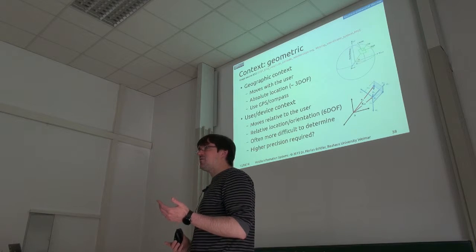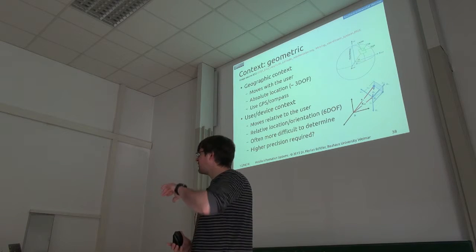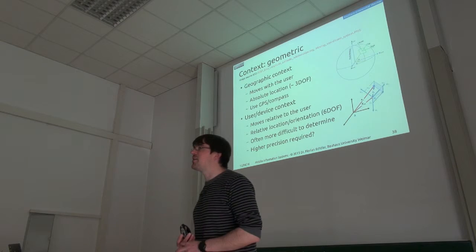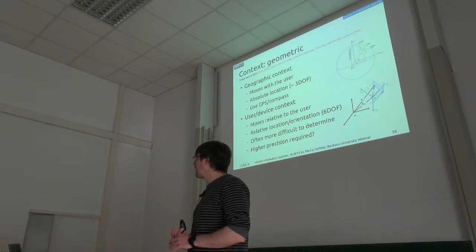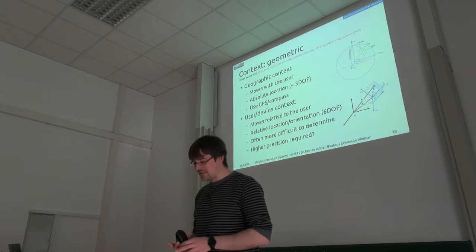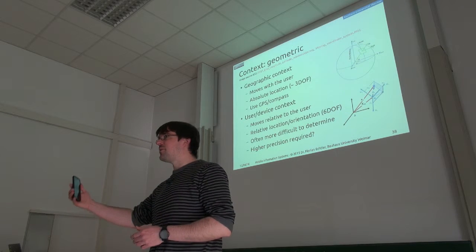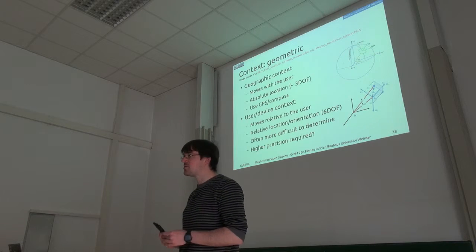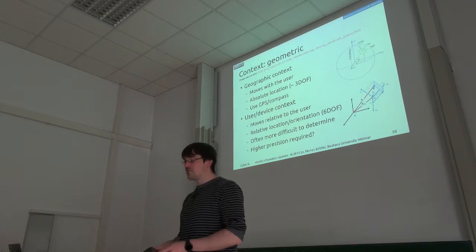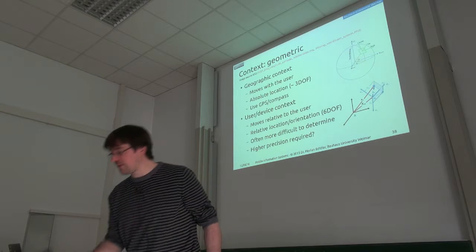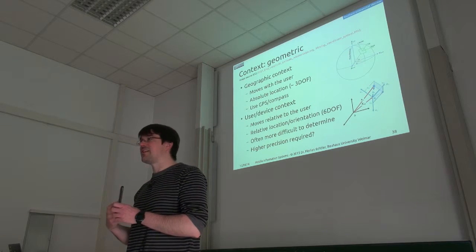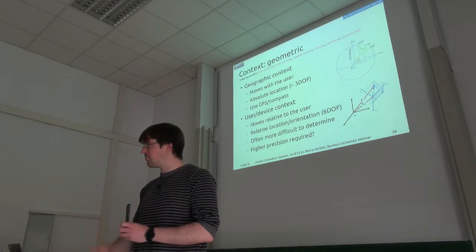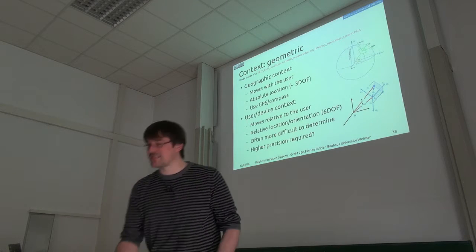Then we have different aspects of geometry regarding context. We have the geographic context — where are you, actually? What street are you at? This can be determined by GPS and by cell location. On the other hand, we have the device context, which is where the device is relative to the user. You might be able to use the accelerometer to determine that up to a certain point — assuming the device is at some known position like on the table, you might determine how high it is. But it's only relative; you always have to assume some fixed starting position.